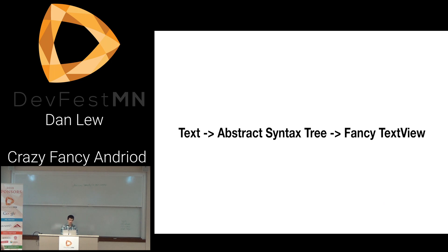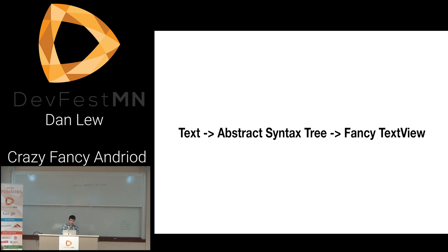So last year we endeavored to replace all of these issues. The basic process for writing a Markdown renderer is that you take the text, convert it into an abstract syntax tree, and then that abstract syntax tree is compiled into a fancy text view. For the text-to-AST part, we use a library that Atlassian put out called CommonMark Java — it works a million times better than our old Markdown parser, which was called libsoldout. Then I myself had to write the abstract-syntax-tree-to-fancy-text-view part, and that's where I learned basically everything I'm about to talk about.